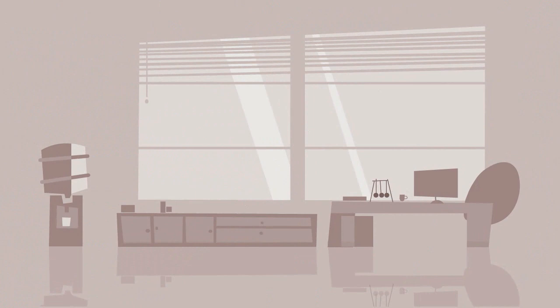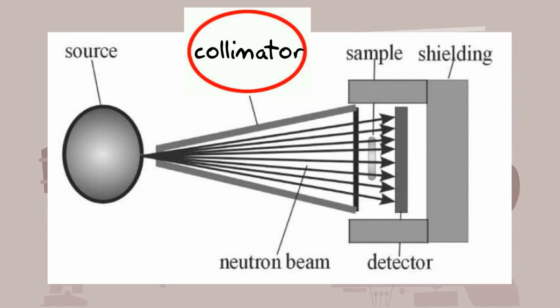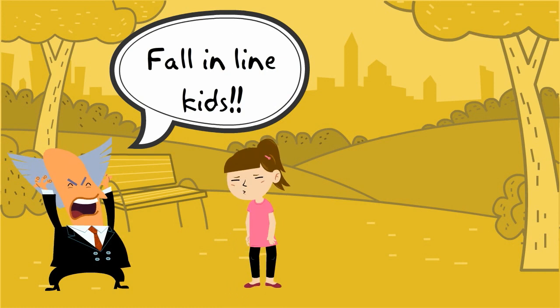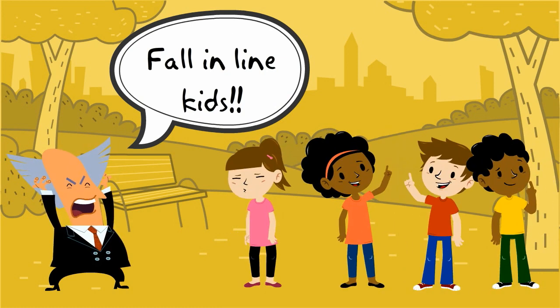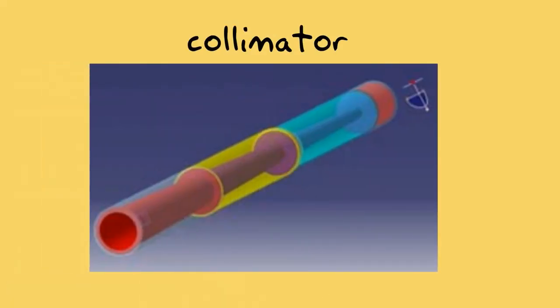Moving on to the next element in the imaging chain, we have the collimators. Just like in X-ray radiography, collimators function as a beam-forming assembly. This is done through neutron moderators and neutron absorbers.